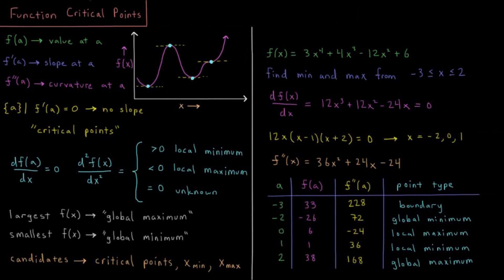This video will review how to find the critical points of functions in one dimension. So let's remind ourselves: f is the value of some function at the point x equals a, and f' is the slope of the function f at x equals a.